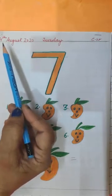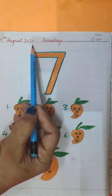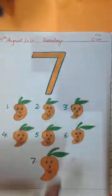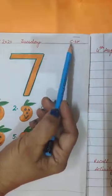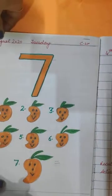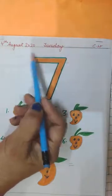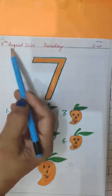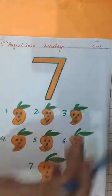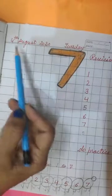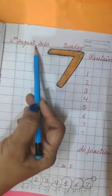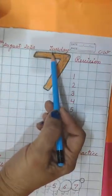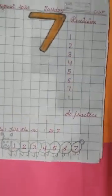And date 4th August 2020, Tuesday and this is your classwork. Yeh aapki mamma likhenge, kyonki aapko ye abhi likhna nahi aata. Your mother will write date, day and classwork. Same, this side: 4th August 2020, Tuesday, classwork. And worksheet like that.